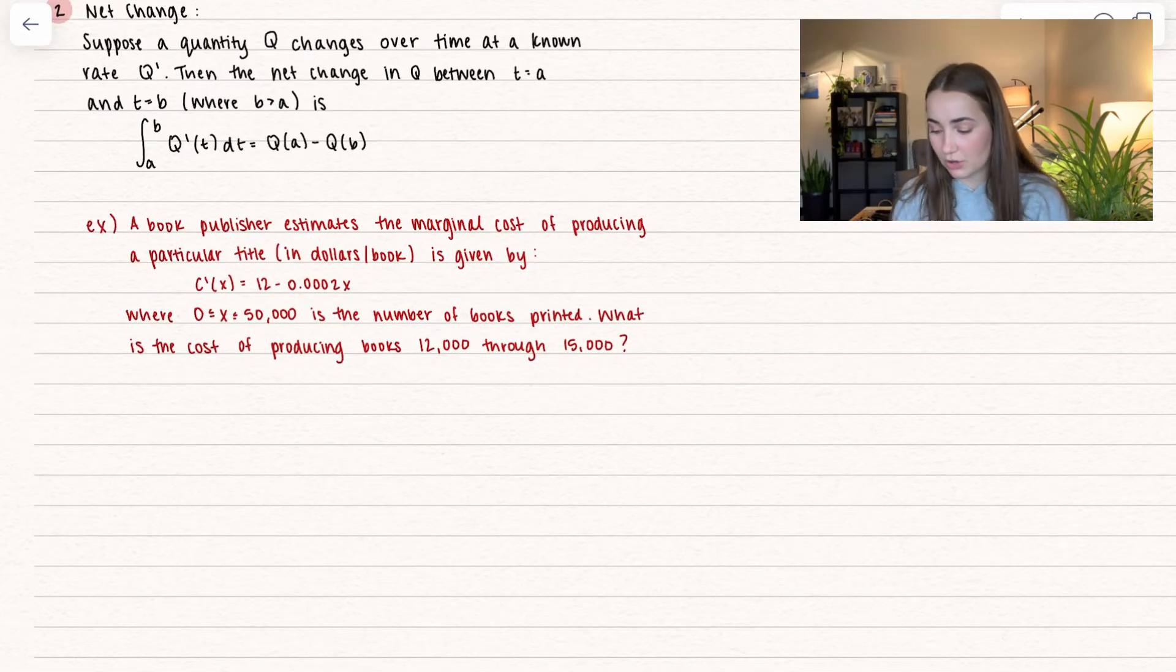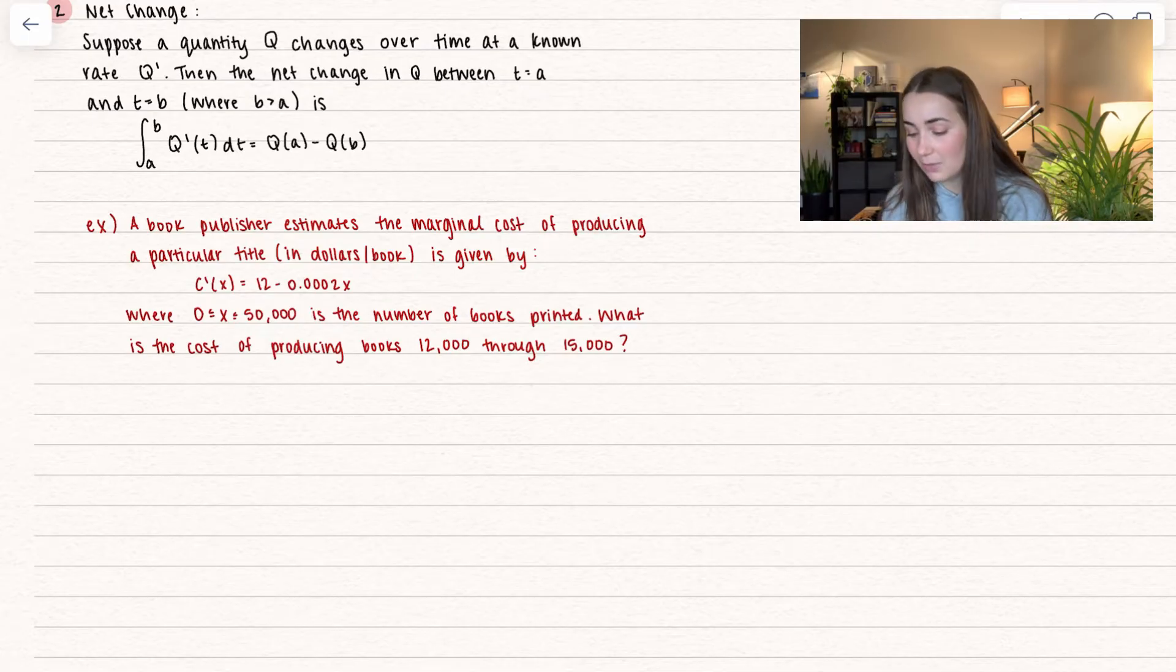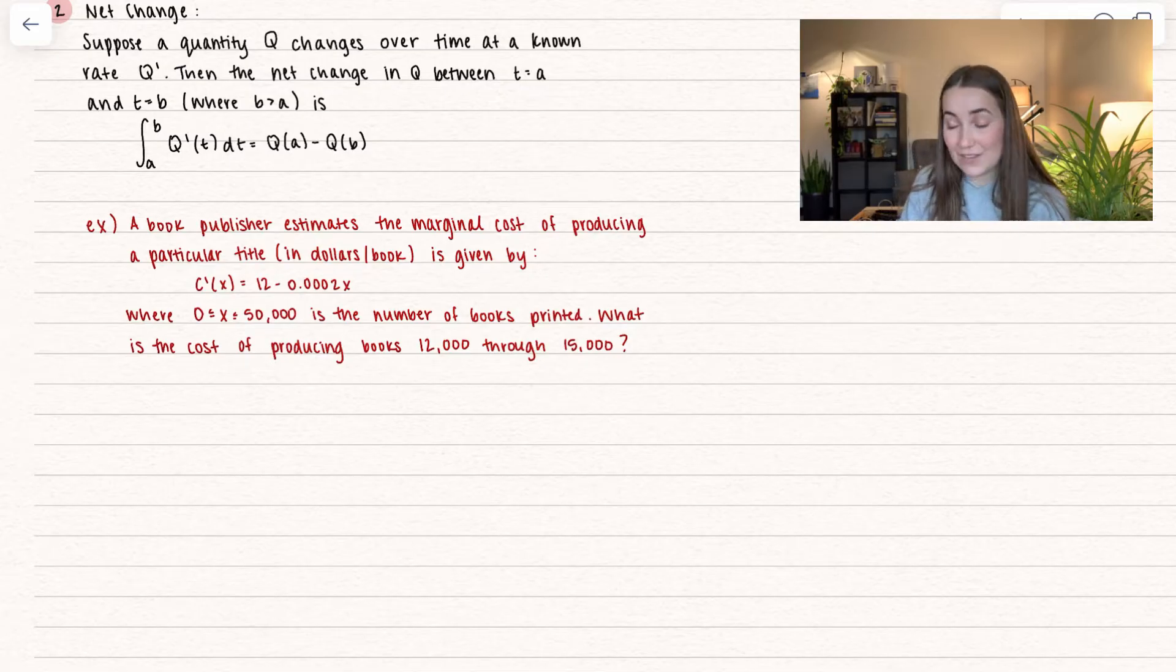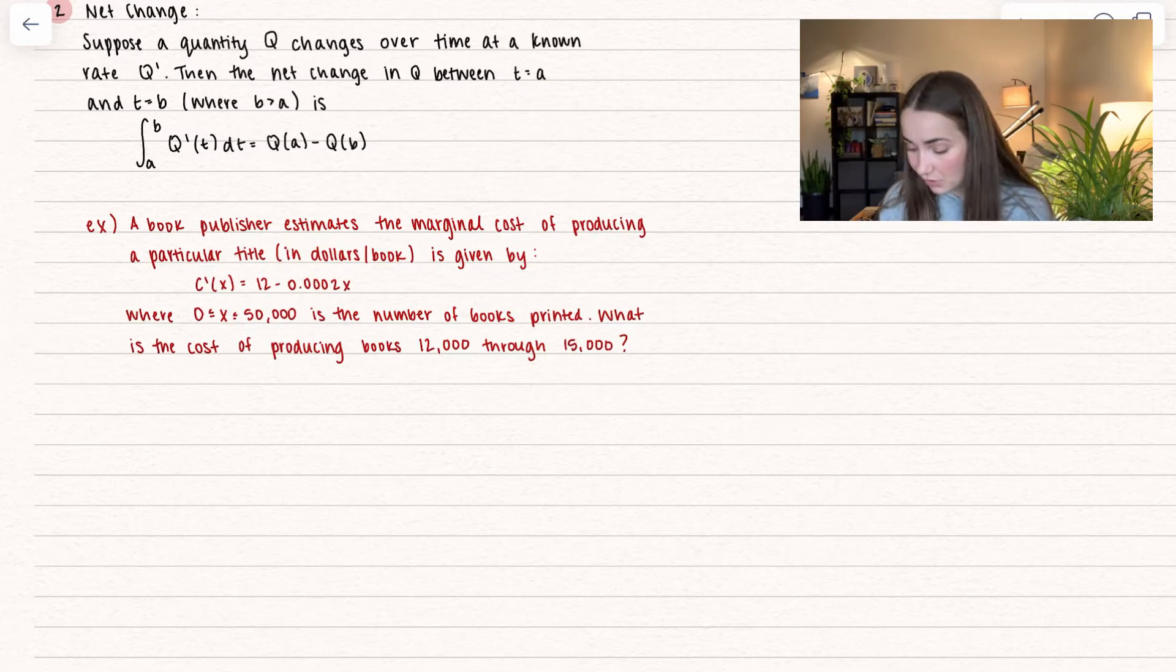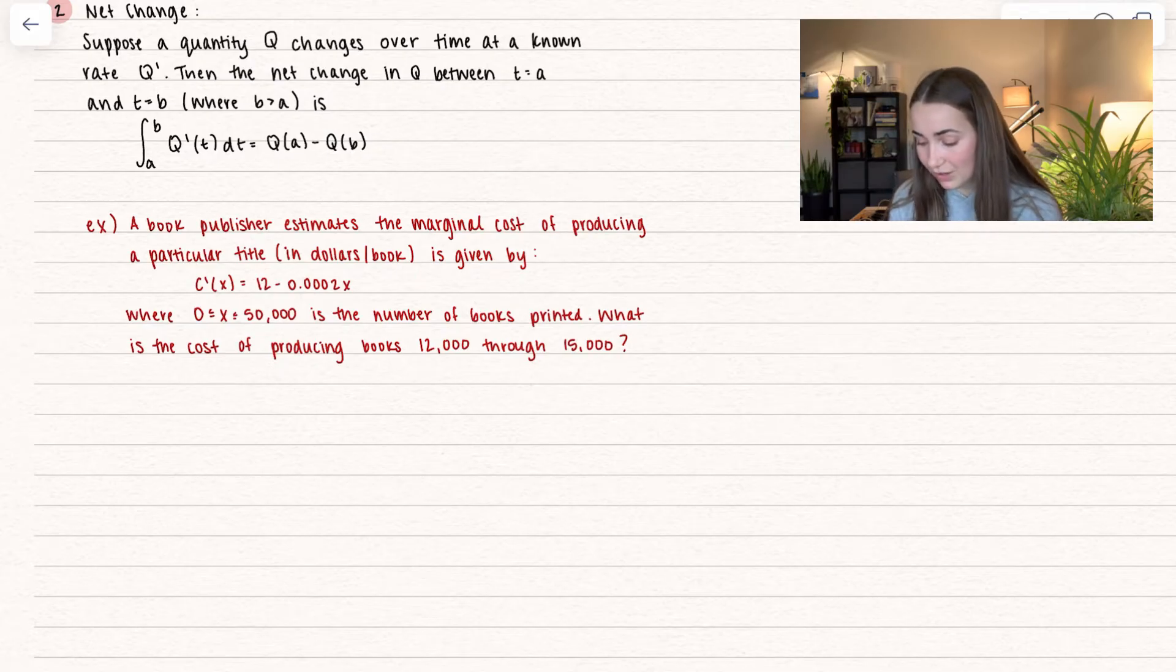We have a book publisher that estimates the marginal cost of producing a particular title in dollars per book is given by that equation right there. The books are between zero and fifty thousand, so those are the books being printed.